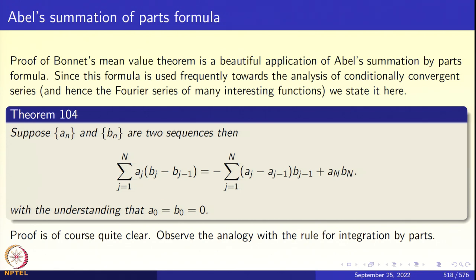To prove Bonnet's mean value theorem we need a result called Abel's summation by parts, Theorem 1.4. Abel's summation by parts states: summation j from 1 to n of a_j times (b_j minus b_{j-1}) equals minus summation j from 1 to n of (a_j minus a_{j-1}) b_{j-1} plus a_n b_n, with the understanding that a_0 and b_0 are both 0. This formula has a striking resemblance to the rule for integration by parts, and the proof is a simple rearrangement. This formula is useful in many results in analysis, particularly in delicate tests for convergence such as the tests of Abel and Dirichlet — you can consult Rudin's Principles of Mathematical Analysis for other applications.